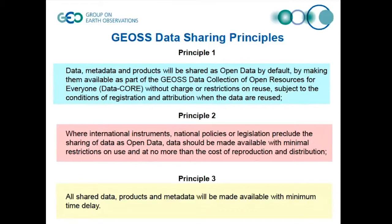The second principle: being a voluntary intergovernmental organization, GEO is not like a treaty or a UN organization. We can't escape the idea that international instruments, national policies, and legislation do supersede things like open sharing of data where it's necessary. As scientists, we recognize there are certain areas in which fully open data sharing isn't always possible because of things like privacy and security concerns. So principle two continues that.